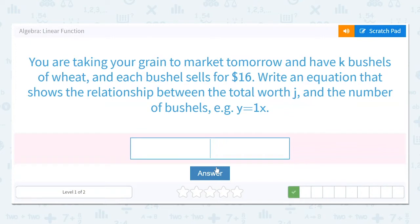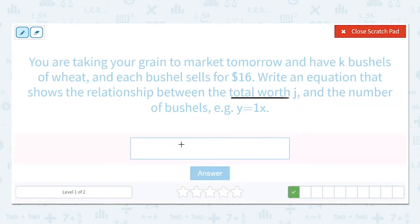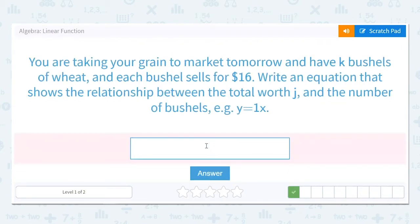You are taking your grain to market tomorrow and have K bushels of wheat. Each bushel sells for $16. Write the equation that shows the relationship between the total worth J and the number of bushels. Let's start with the total again. It said the total they represented with J. And we make $16 per bushel. And it says we have K bushels. So if I take the number of bushels, K, times $16 for each bushel, I should get the total J. So J equals 16K.